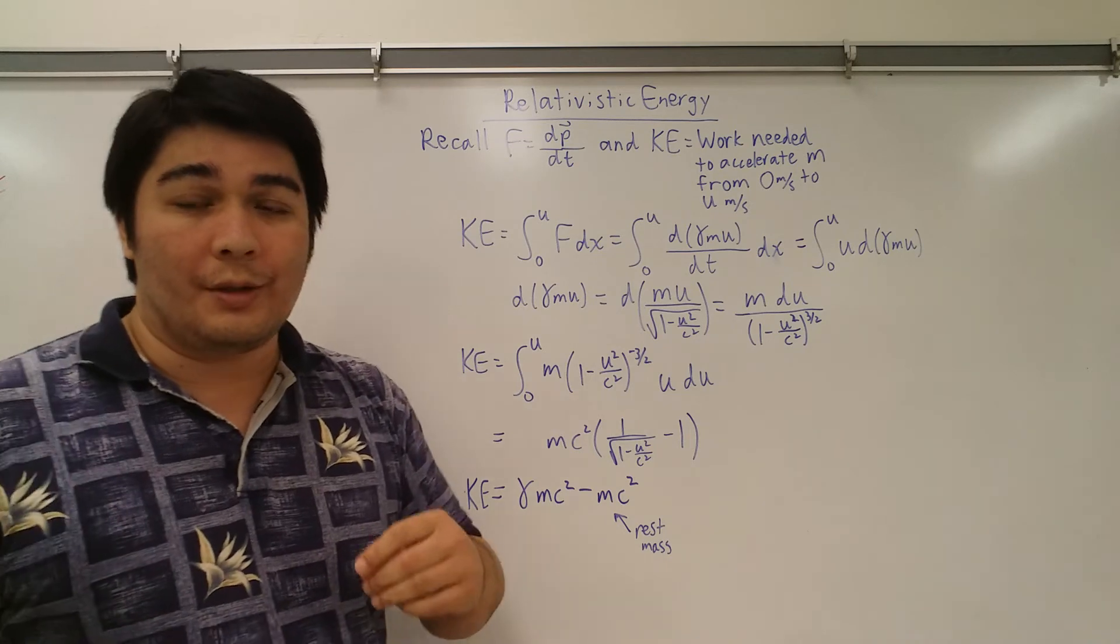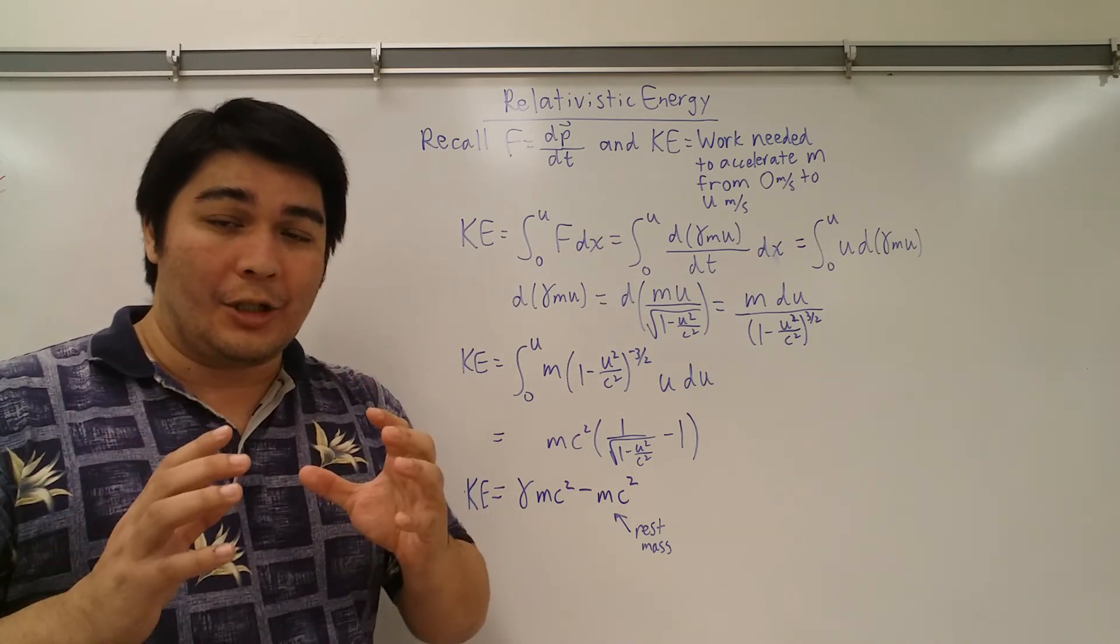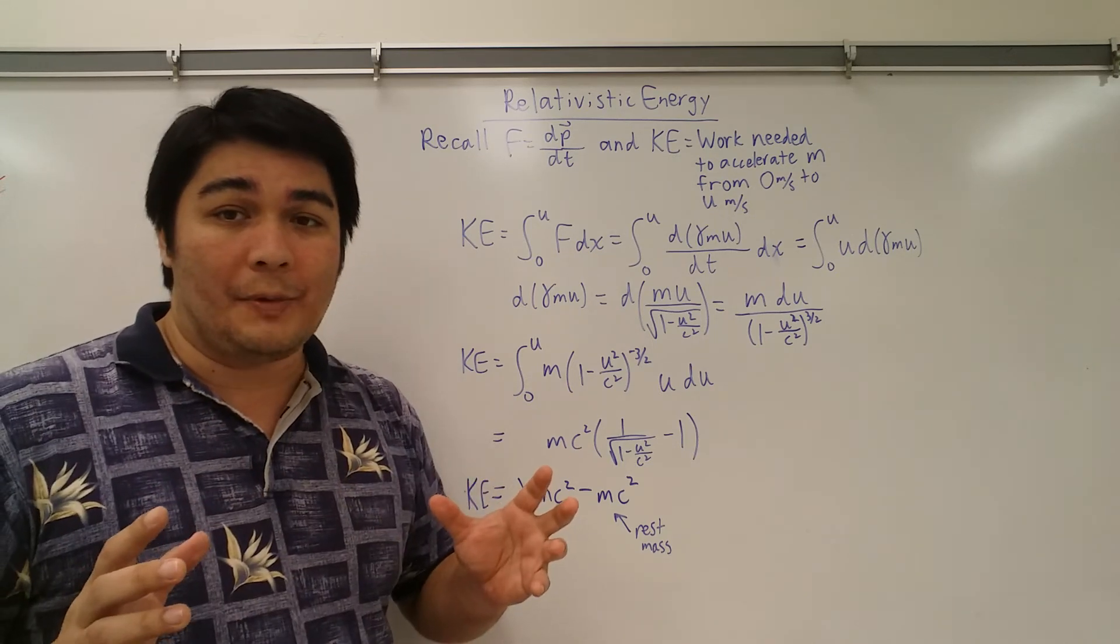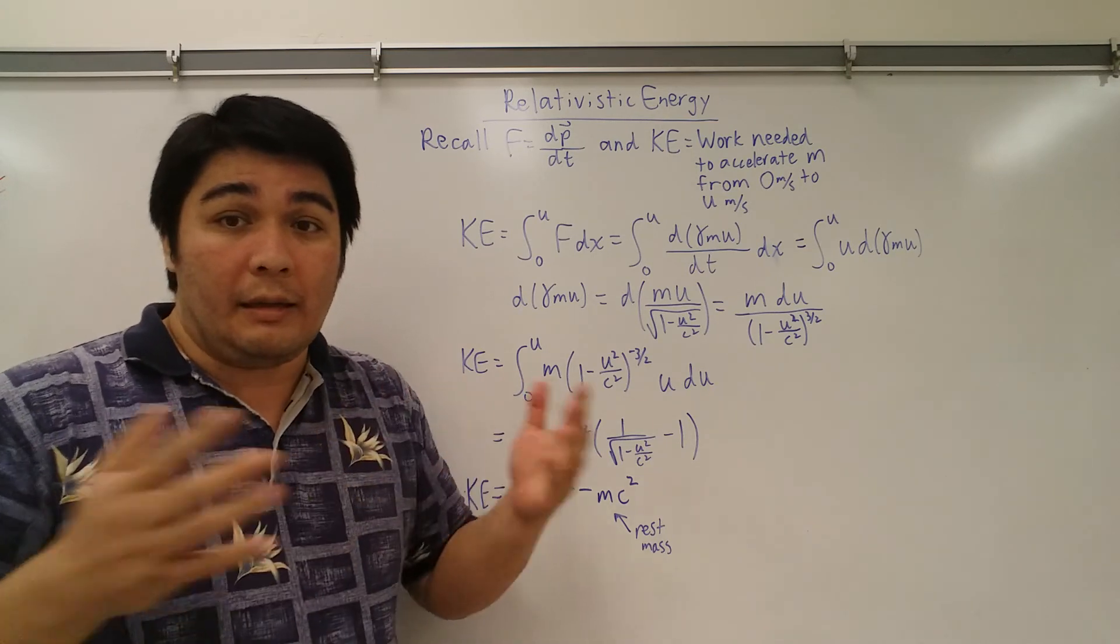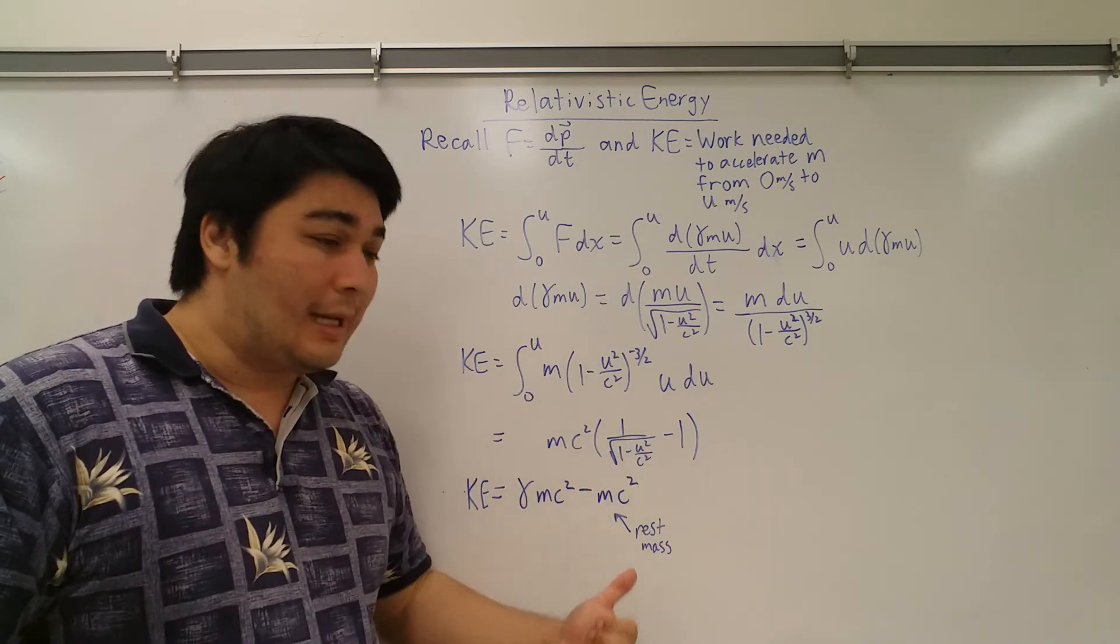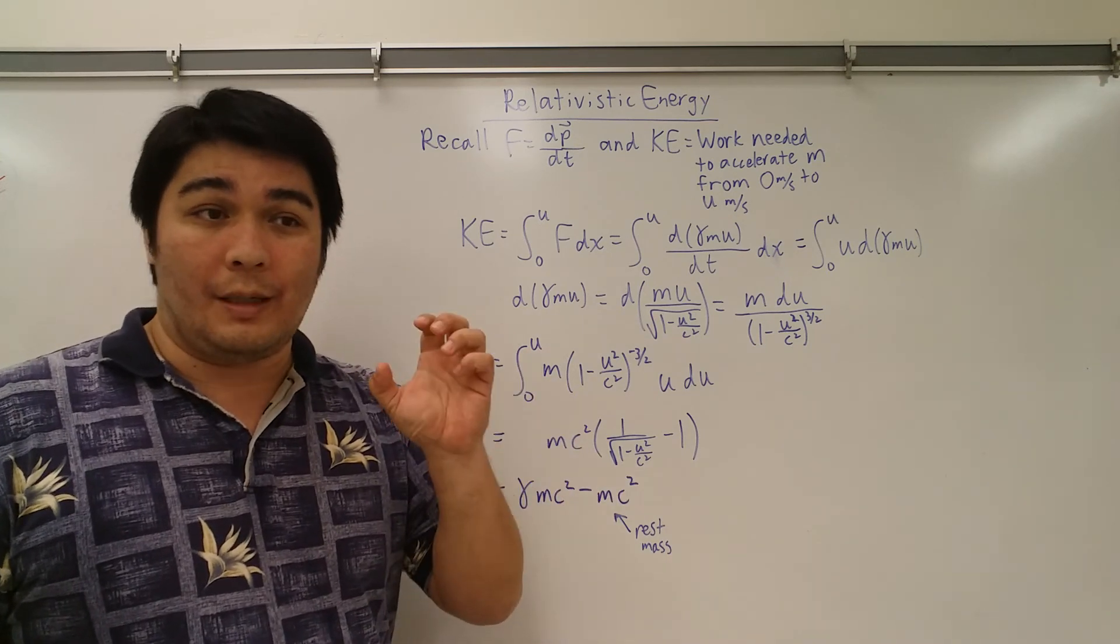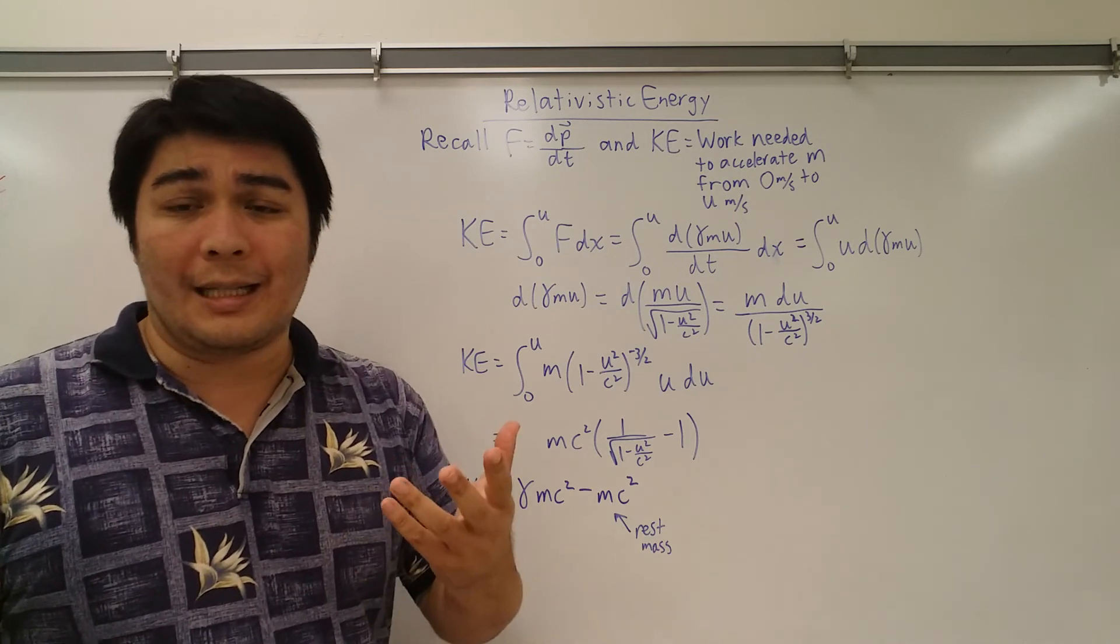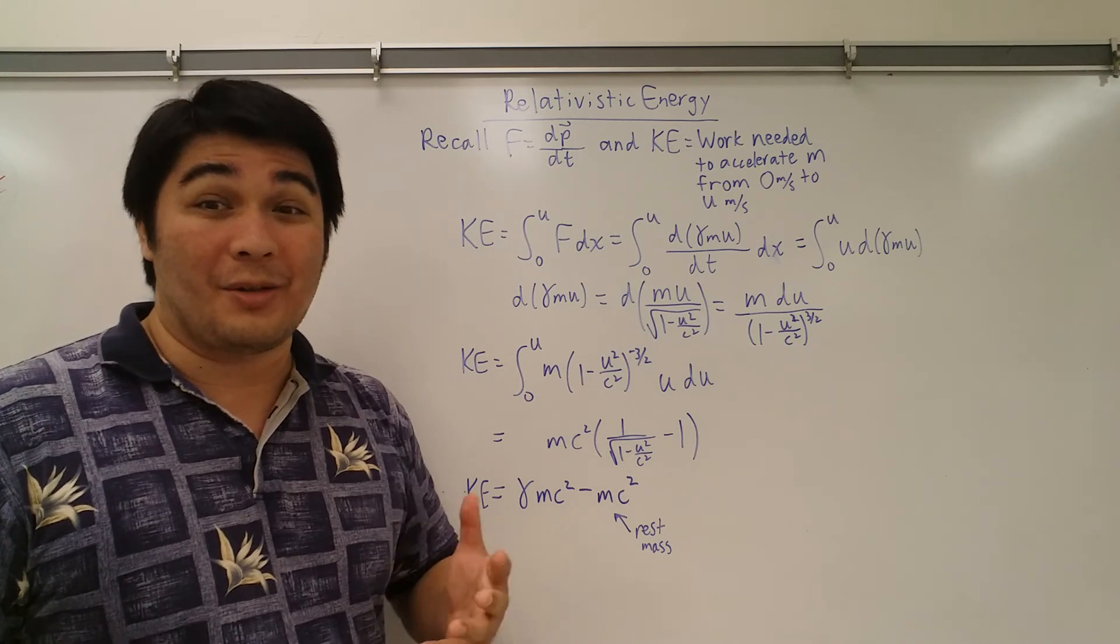So that means there is an inherent amount of energy that is just inherent to any object with mass. So you, me, anything with mass, we could actually convert that, the result of this idea is that you can convert that purely into energy. And that's of course where the concept of antimatter comes in and all those other fun things that we talk about in modern physics.